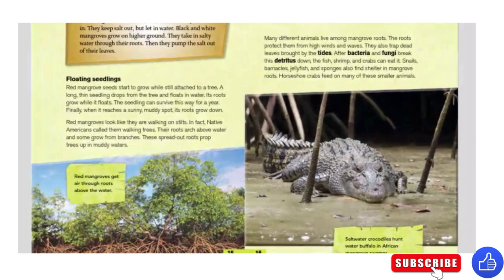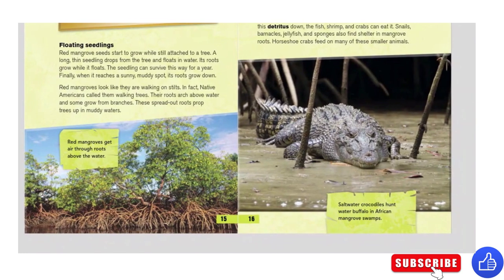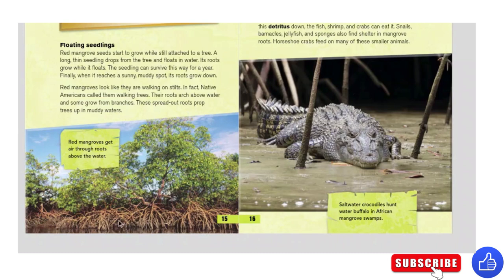Floating seedlings. Red mangrove seeds start to grow while still attached to a tree. A long, thin seedling drops from the tree and floats in water. Its roots grow while it floats, and the seedling can survive this way for a year. Finally, when it reaches a sunny, muddy spot, its roots grow down. Red mangroves look like they are walking on stilts. Native Americans call them walking trees. Their roots arch above water, and some grow from branches. These spread-out roots prop trees up in muddy waters. Red mangroves get air through roots above the water.